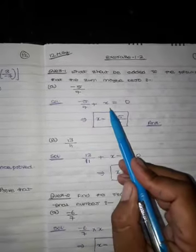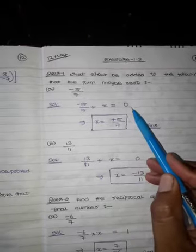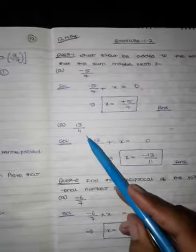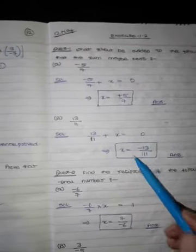Minus 5.7, we will add x, so what will happen? 0. So x is equal to positive 5.7. Same as 13 upon 11 plus x is equal to 0, so x is equal to minus 13 upon 11.